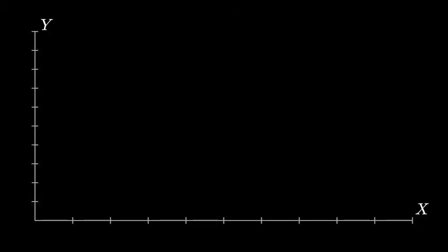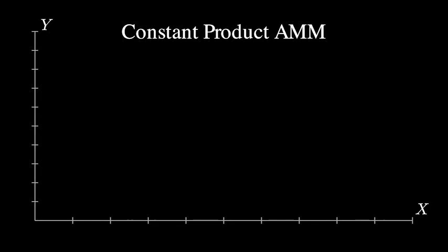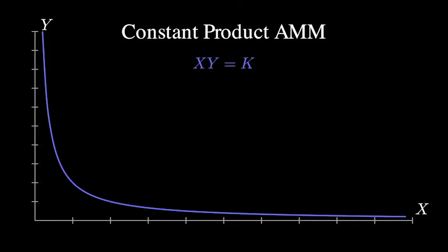Stableswap combines two famous AMM mechanisms, the first of which is a constant product AMM. This was made famous by Uniswap and SushiSwap on Ethereum. We can see the quantity of X tokens on the X axis and the quantity of Y tokens on the Y axis.